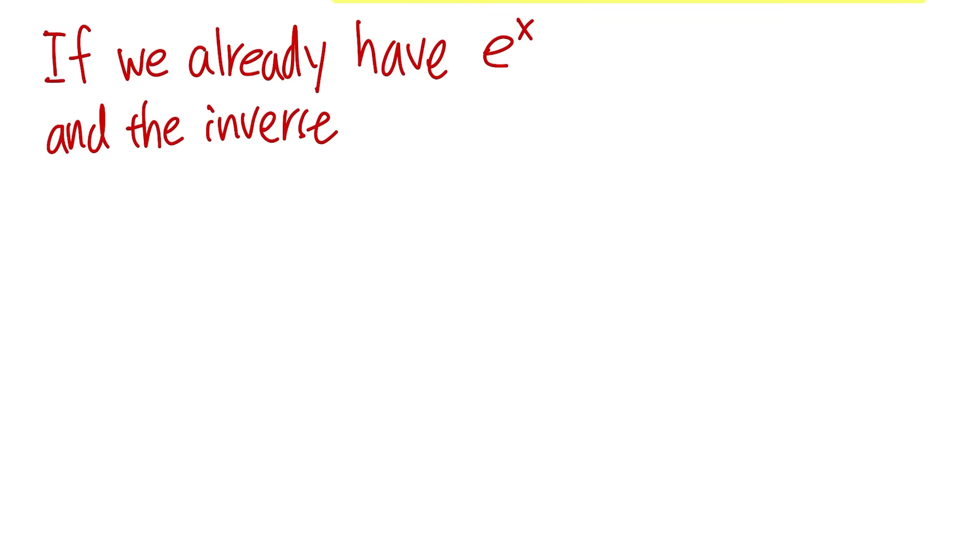First, I will have to assume that we already have the exponential function. So suppose if we already have the exponential function e to the x. Of course, you also need to know what the number e is, and you should also give a definition for it. And also, the inverse of e to the x is ln(x).